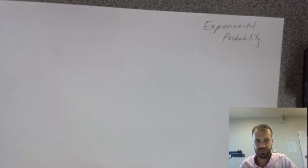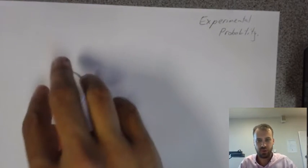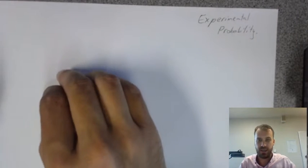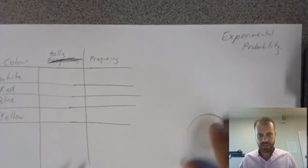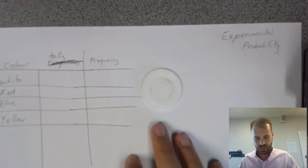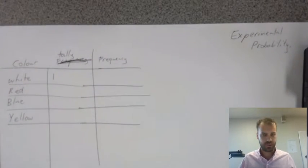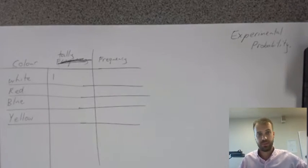Okay, so, an experiment is just a number of trials. And I'm going to record each of these in a relative frequency table. Here's my relative frequency table. The first thing I pulled out was white. So, that's one tally mark for white. Alright, I'm just going to go into fast forward here, and let's do an experiment.